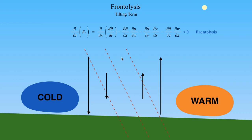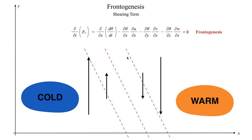The horizontal shearing term is essentially the same picture, just in the x–y direction instead of x–z. It's the same process: warmer air moving toward colder air and colder air toward warmer air gives frontogenesis; pulling isotherms apart and bringing colder air to the warm side and warmer air to the cold side weakens the frontal boundary, giving frontolysis.